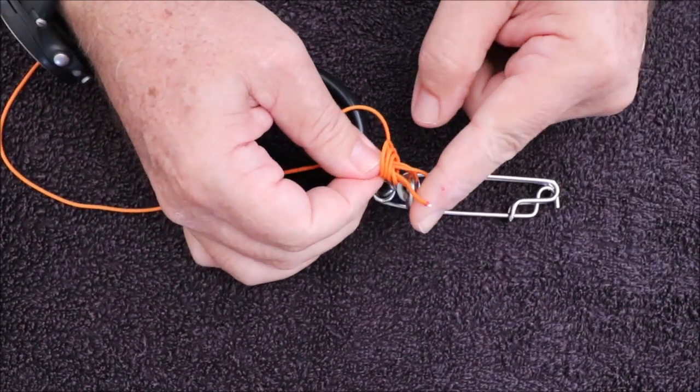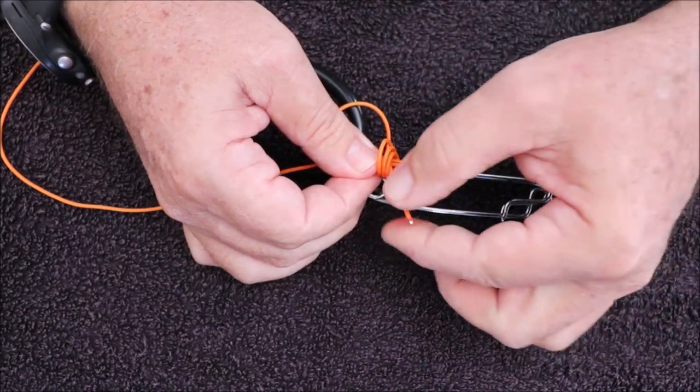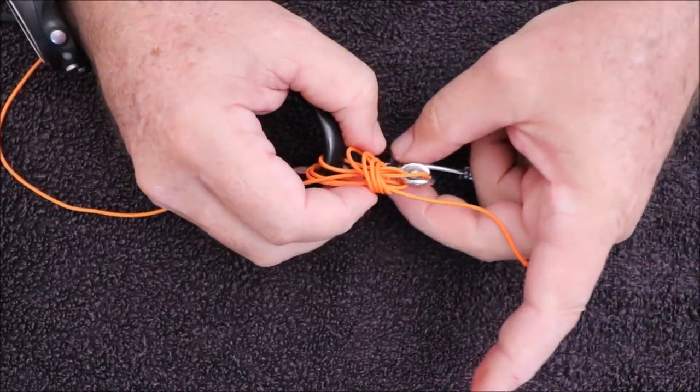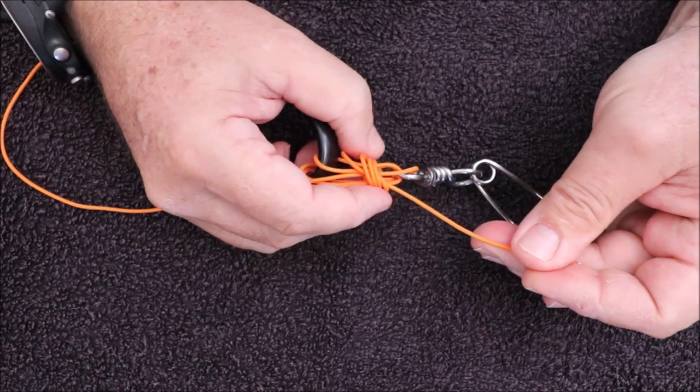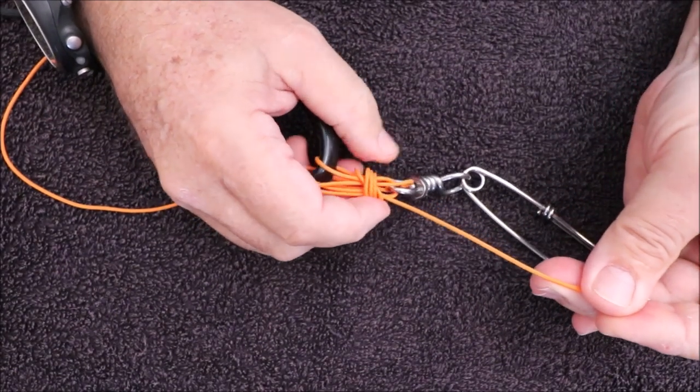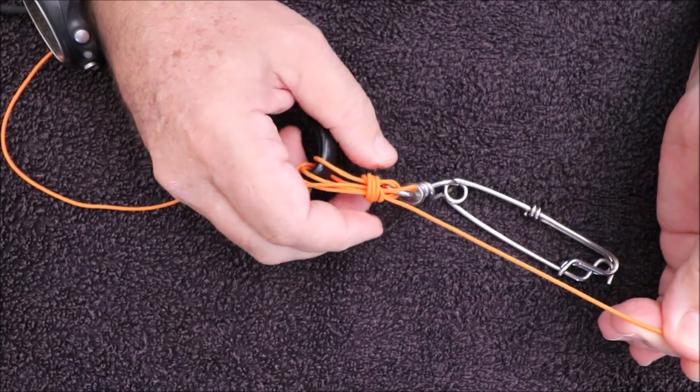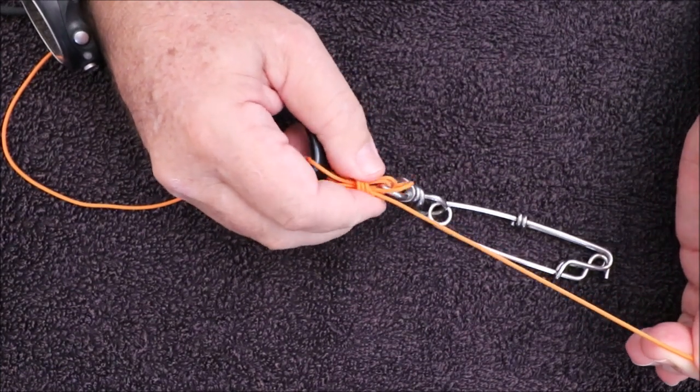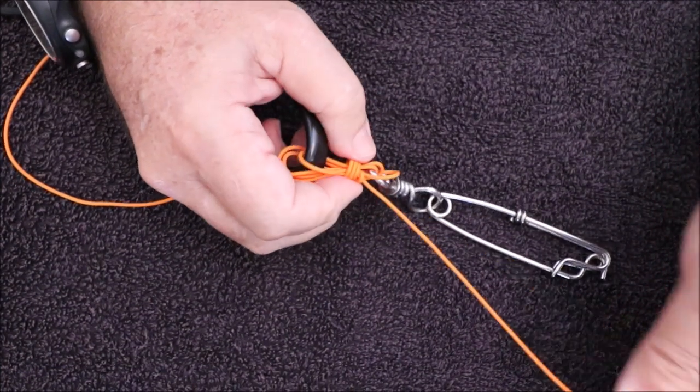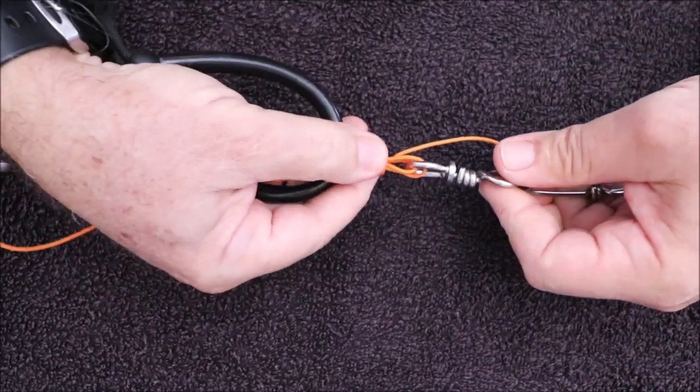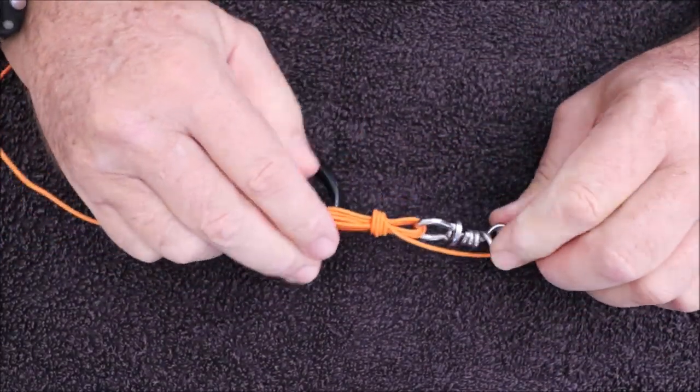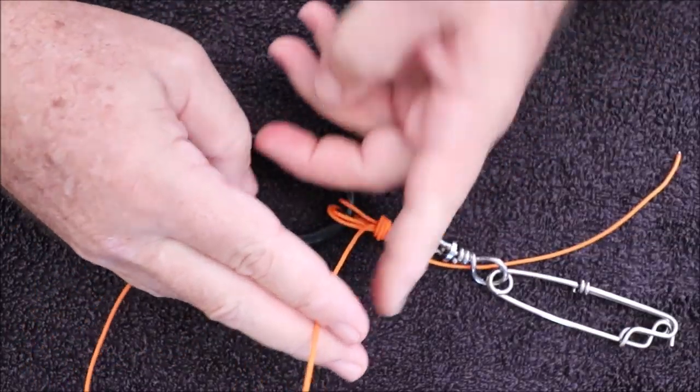As you can see, I've burnt the end, it makes it much easier to manipulate. Once through, slowly wrap the bindings. Don't pull it too tight yet, just keeping them nice and neat all together. Now do exactly the same on the other side.